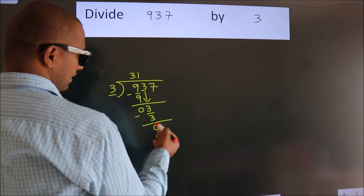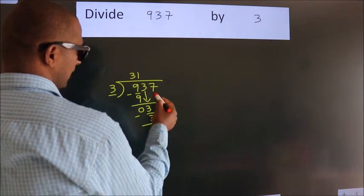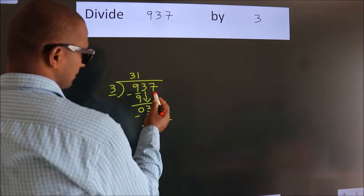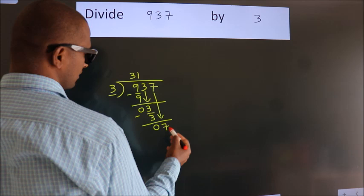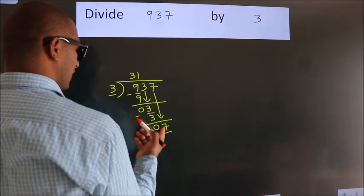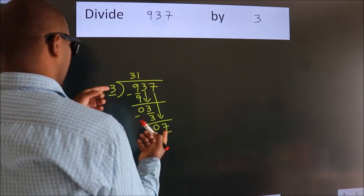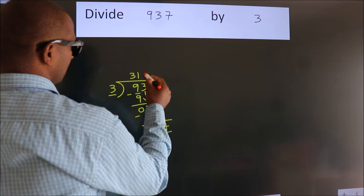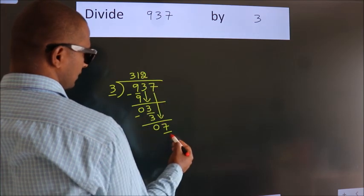We get 0. So, after this, bring down the beside number. So 7 down. A number close to 7 in 3 table is 3 times 2 is 6.